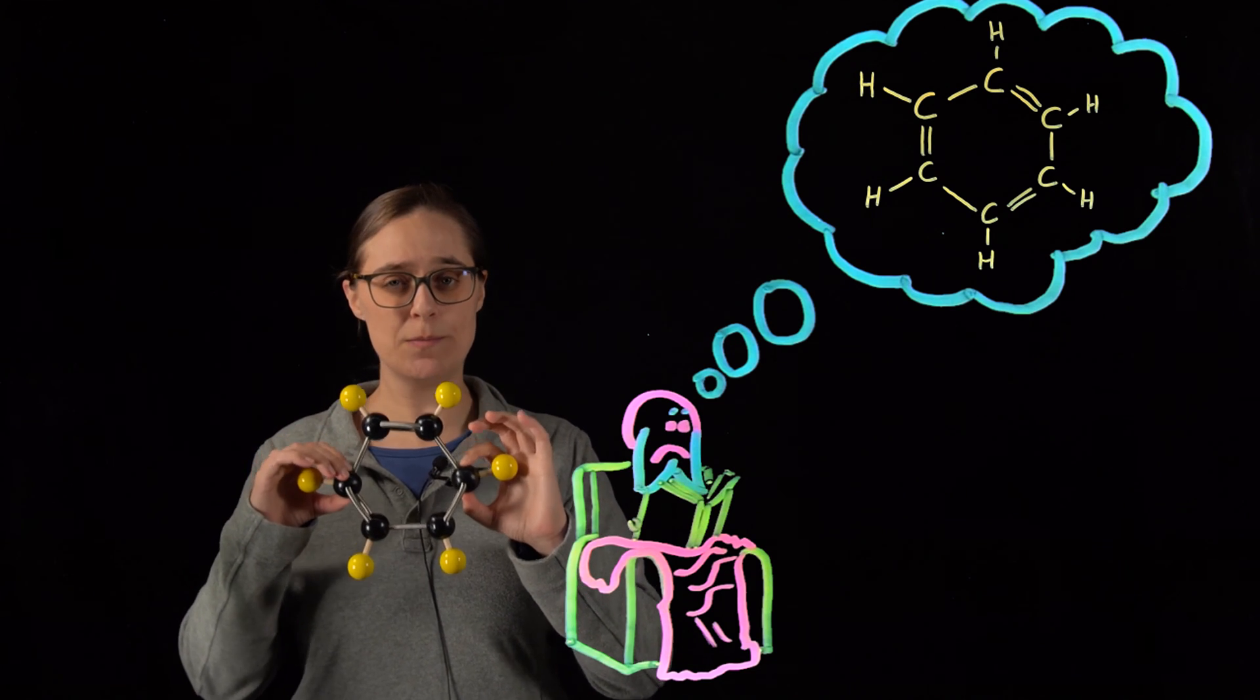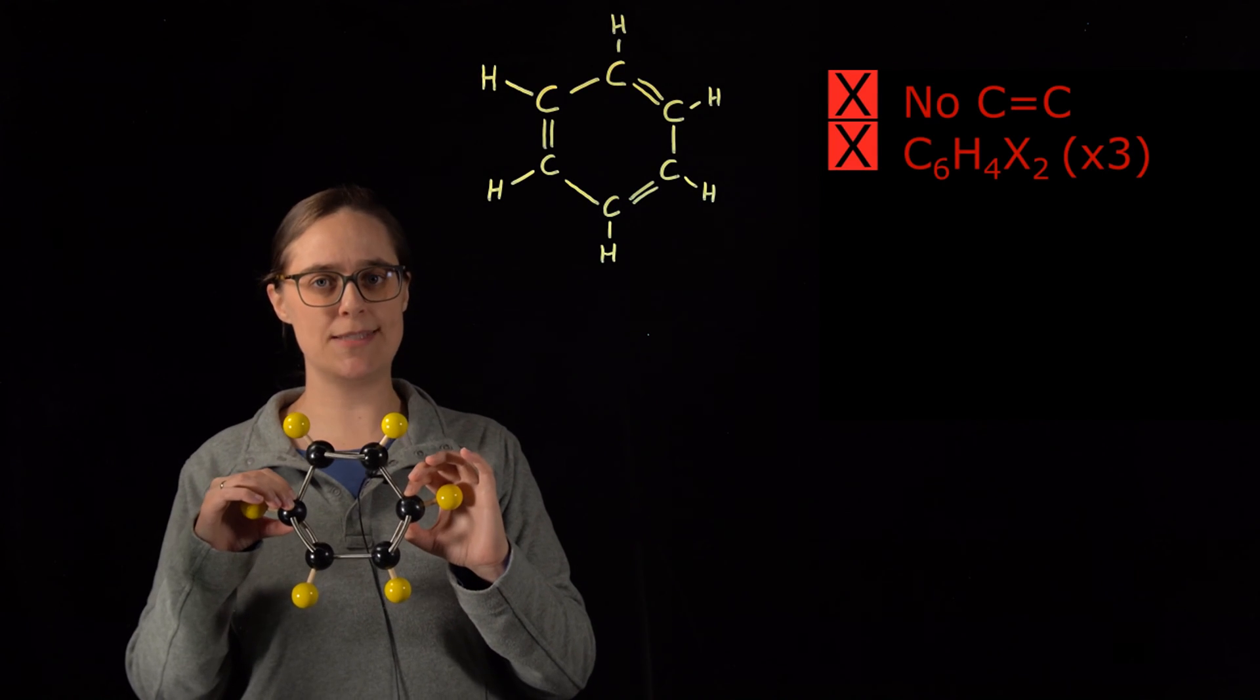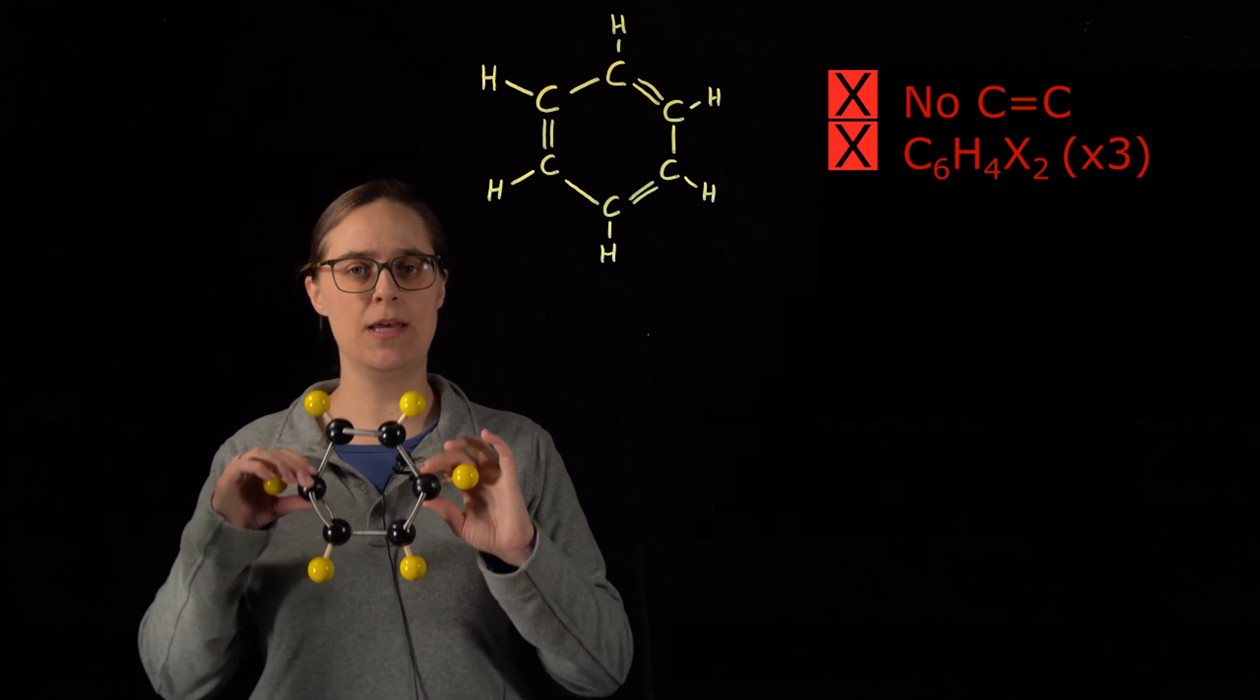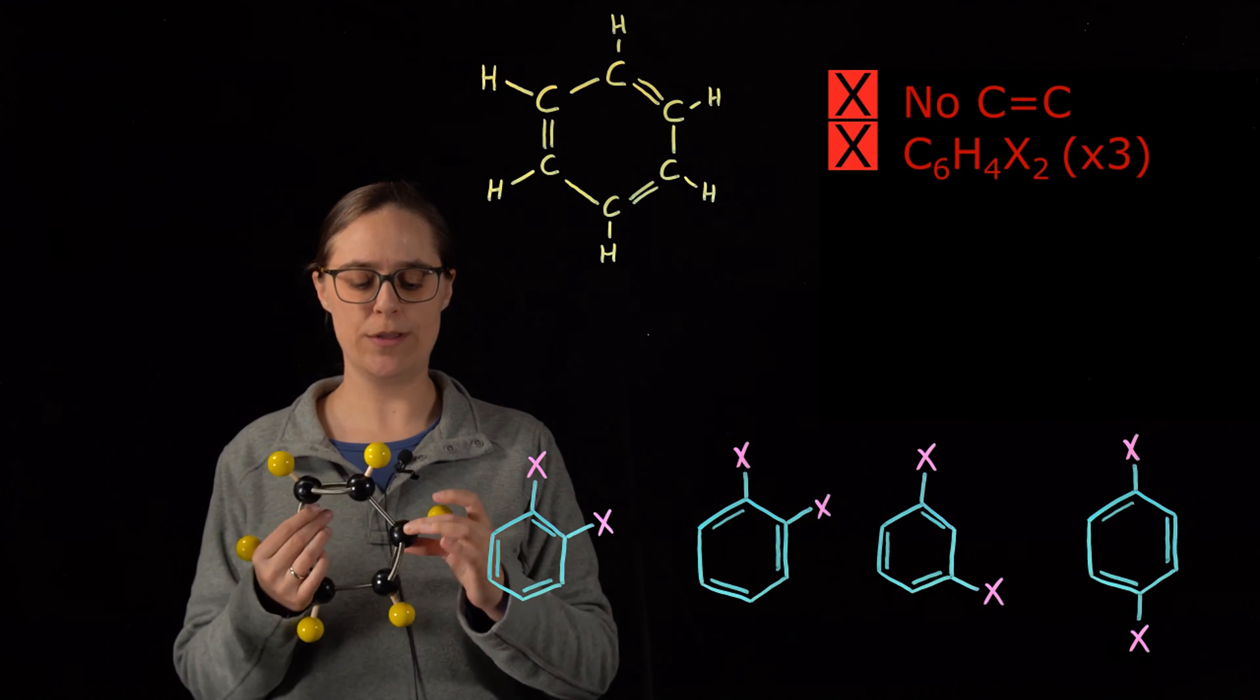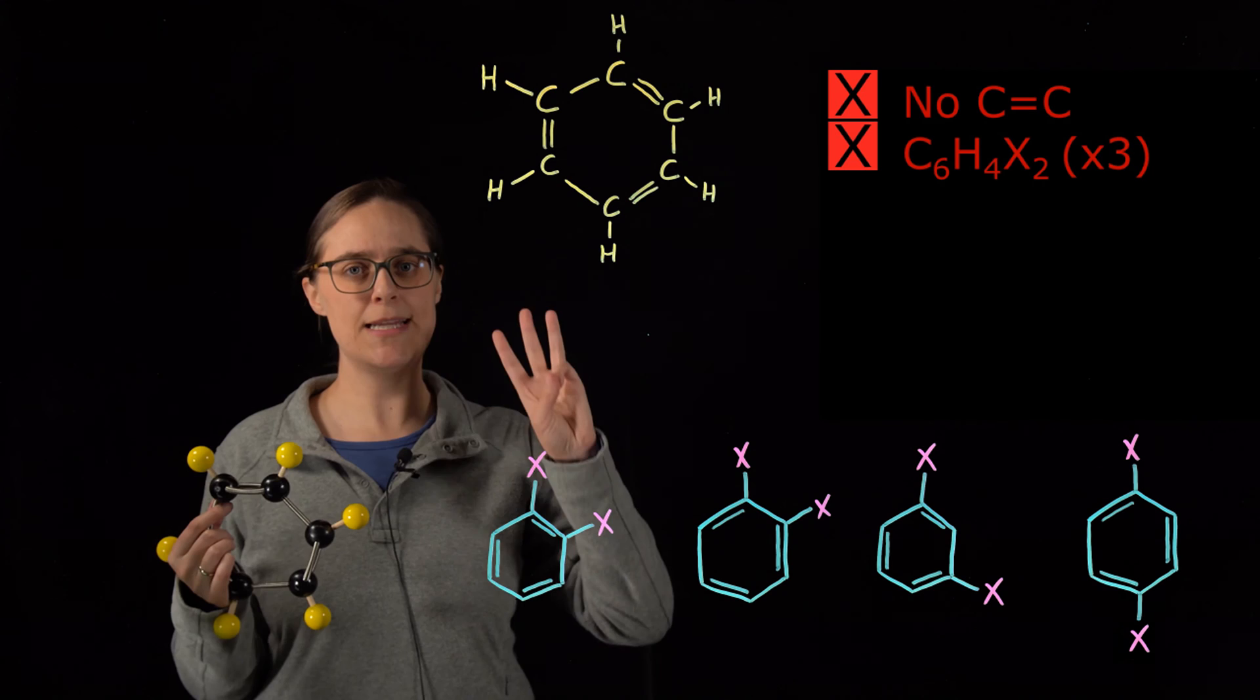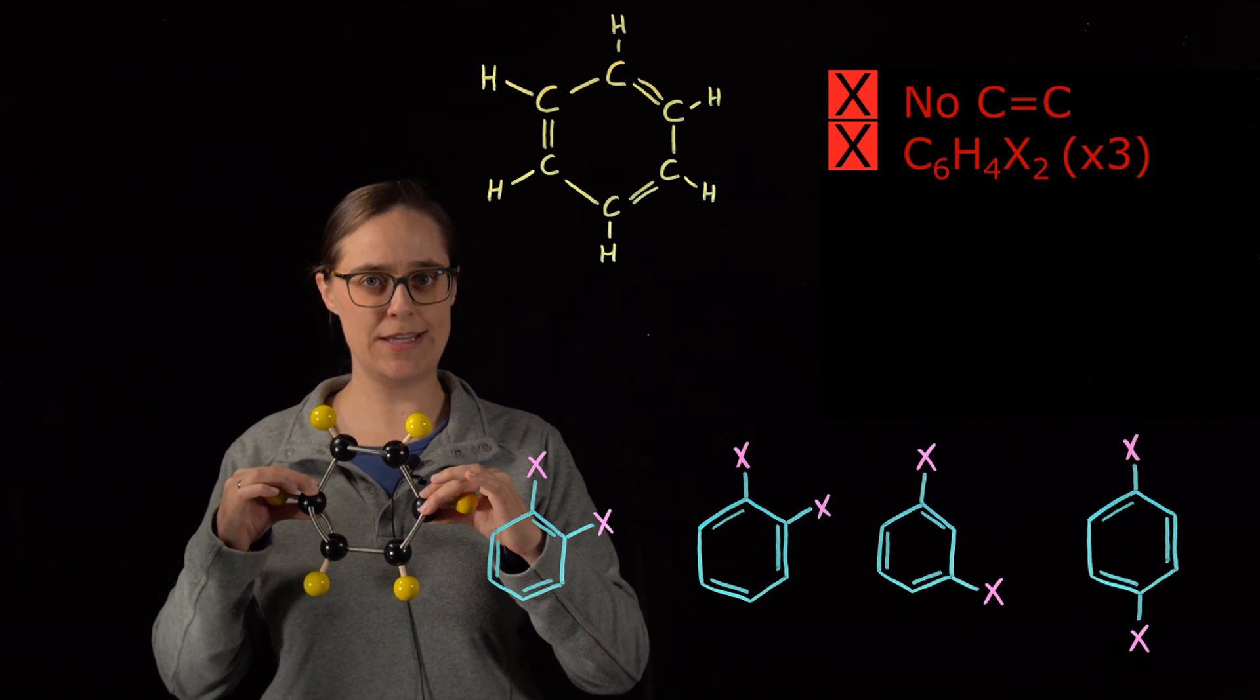So we knew that benzene did not contain any carbon-carbon double bonds, but Kekulé's structure contained three. We also knew that if you were to replace any two of these hydrogens with halogens completely at random, benzene had three possible products, but Kekulé's structure looks like it has four.